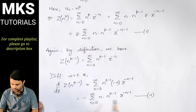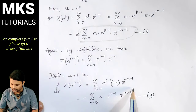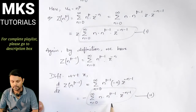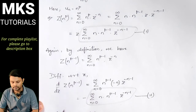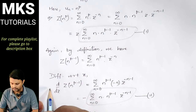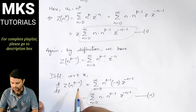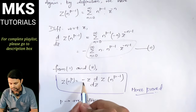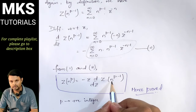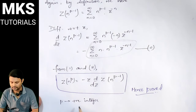Comparing equation 1 and equation 2, we can write: Z-transform of n to the power p equals minus z times d/dz of Z-transform of n to the power p minus 1. This is what we had to prove, where p should be a positive integer.